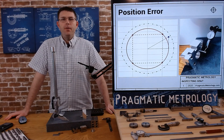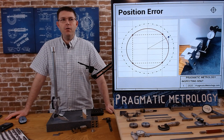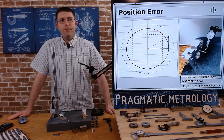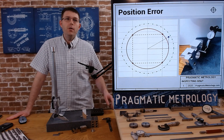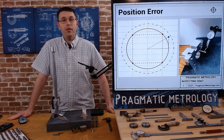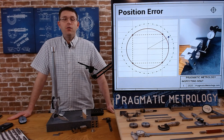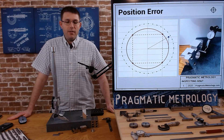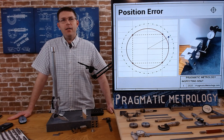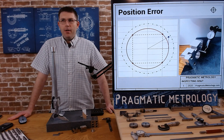In this video I'm going to cover position error. I told you in my other GD&T symbol videos that I would cover position error in its own video because I wanted to really go in depth on how to understand the tolerance zone and demonstrate a tool I've developed. If you go to the Pragmatic Metrology website you should find a GD&T position calculator you can download and follow along. You will need Microsoft Excel 2010 or later.